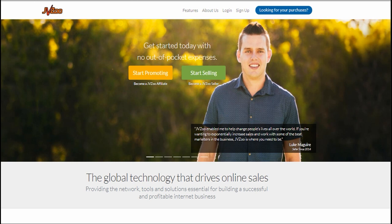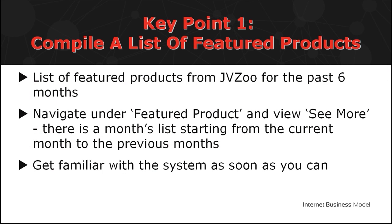So where do you understand the market needs? First, create an account on jvzoo.com — the most well-known affiliate site among Internet marketers. It's a marketplace for product creators and affiliate marketers to market various digital products, ranging from e-books, video tutorials, software, apps, and plug-ins. Second, compile a list of featured products of the past six months. You can find this under the Featured Products section in JVZoo, where you can view the top picks for past months and browse by month.